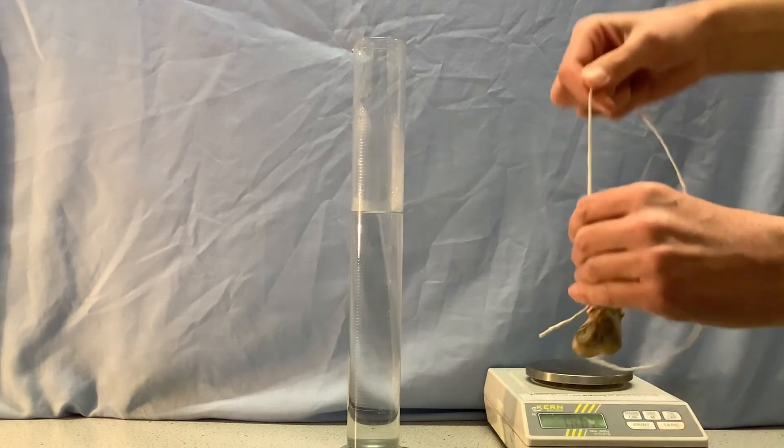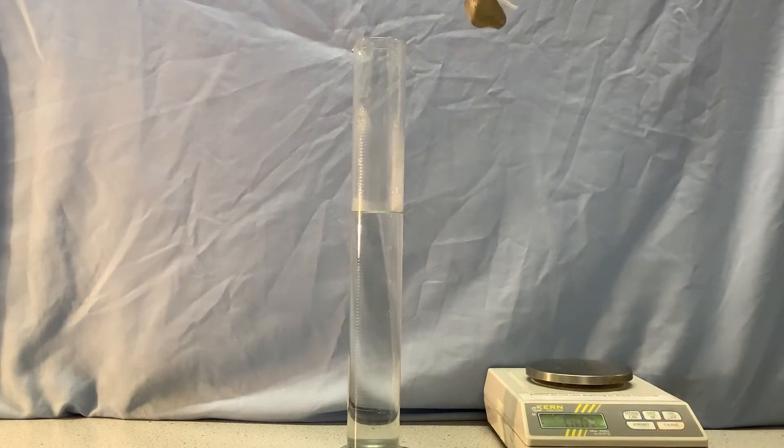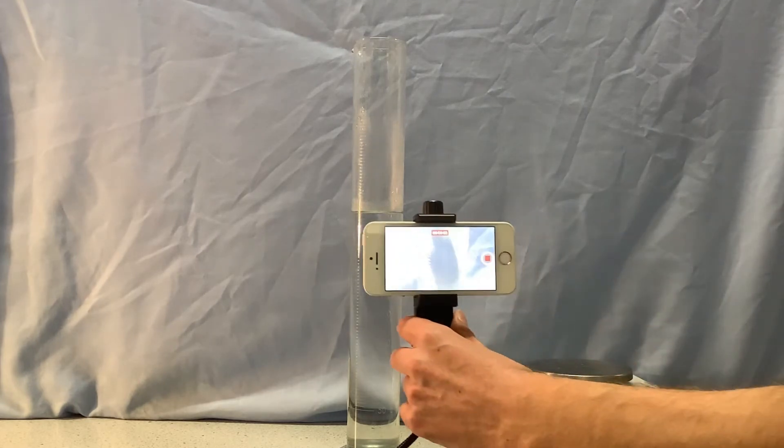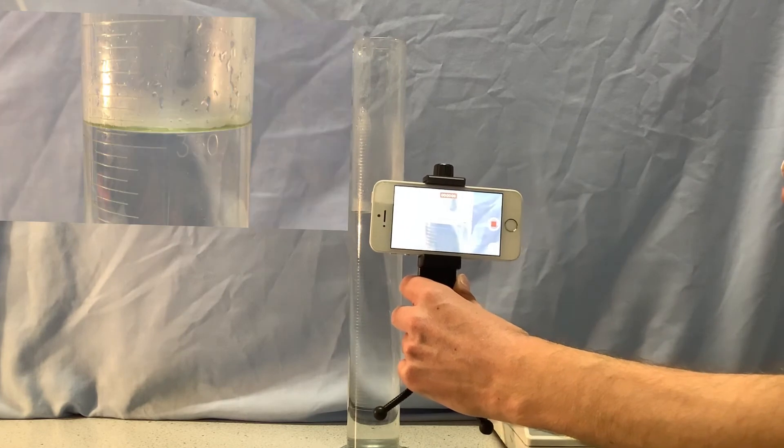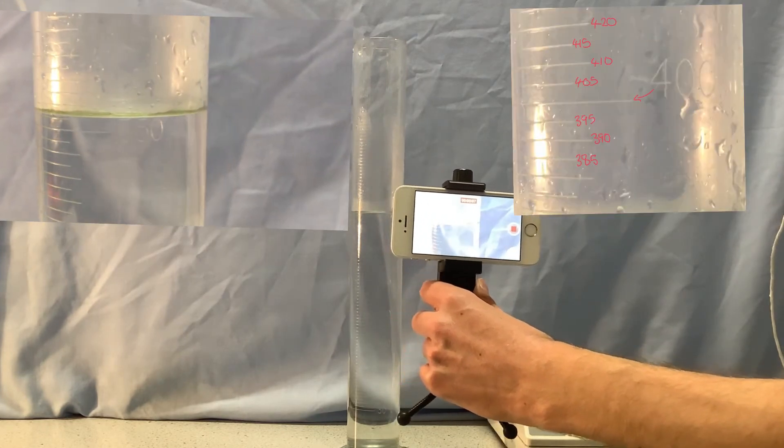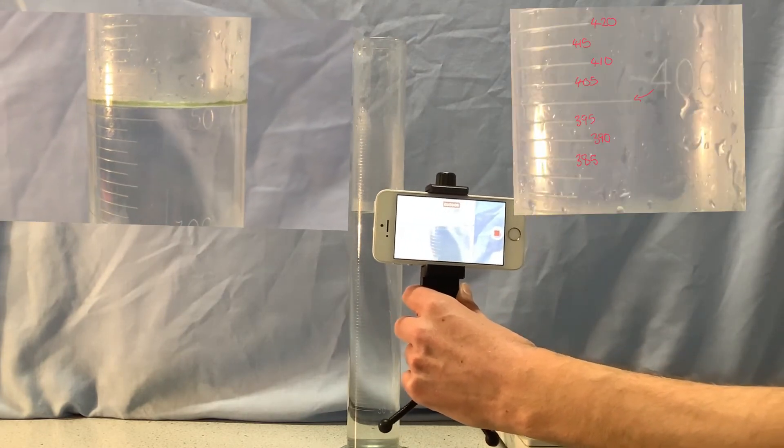So what I'm going to do is lower this into the measuring cylinder and see how the level of water changes. But so that you have a better chance of being able to take a reading I'm going to start my second camera again and move the camera level with the measuring cylinder so that you can hopefully take a reading.